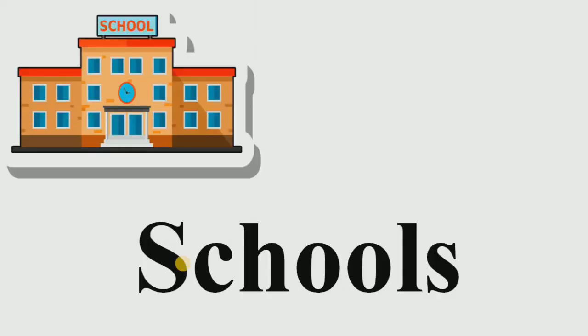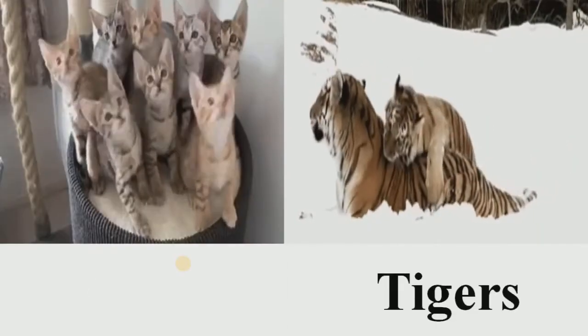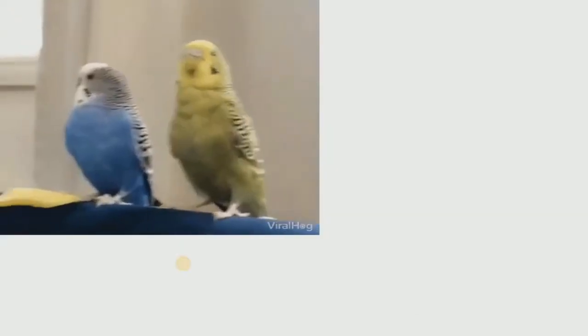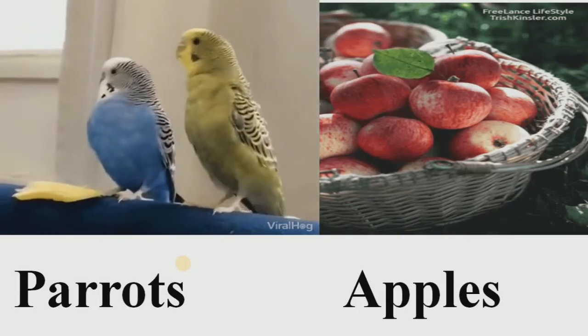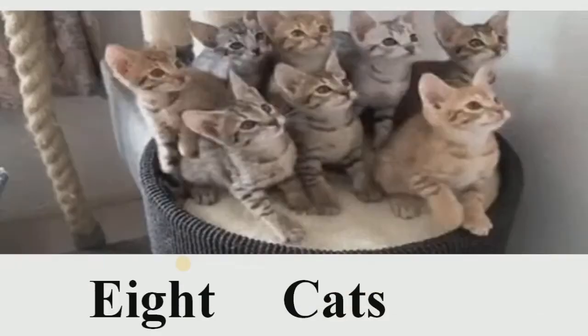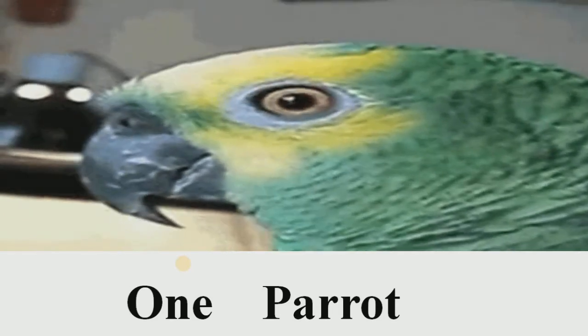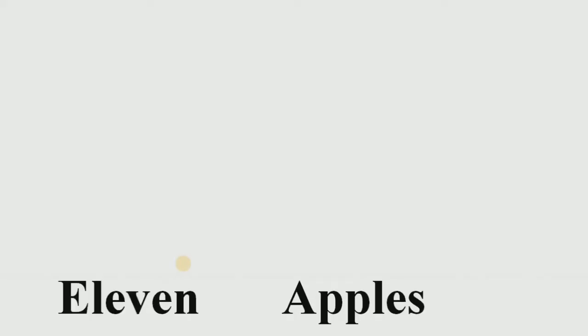For example: schools, tigers, cats, parrots, apples, etc. Let's understand this concept further. One school — two schools; one tiger — three tigers; one cat — eight cats; one parrot — four parrots; one apple — eleven apples.